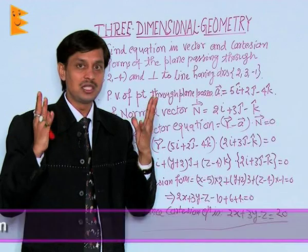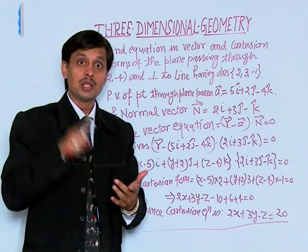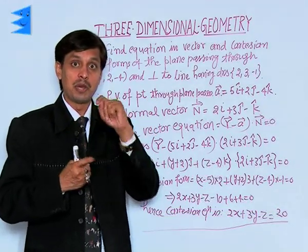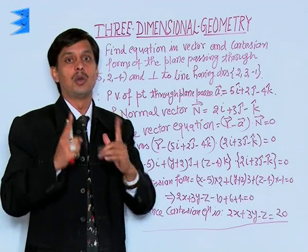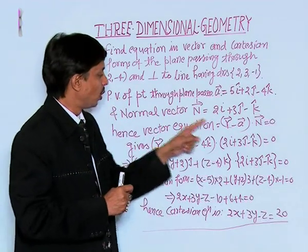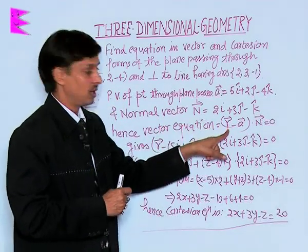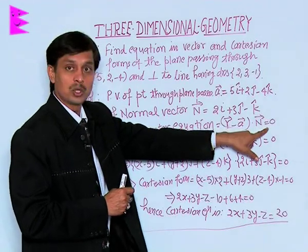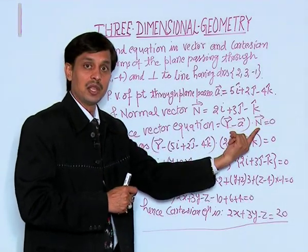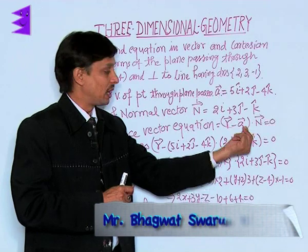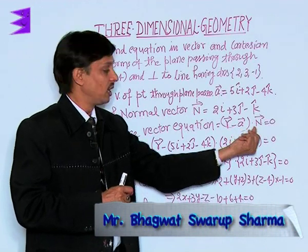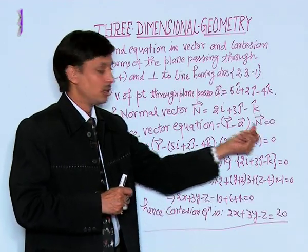R is xi + yj + zk, A is the position vector of that point through which the plane is passing, and N is the normal vector. So in place of R, (R - A) · N = 0 is the formula for finding the equation of the plane passing through position vector A with normal N.